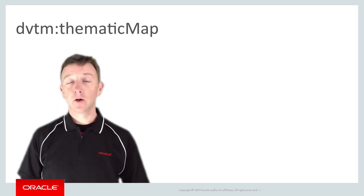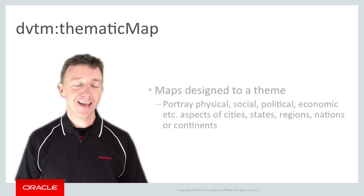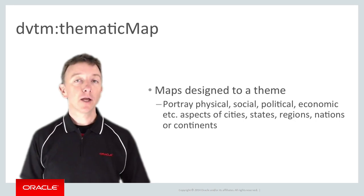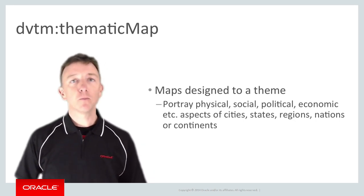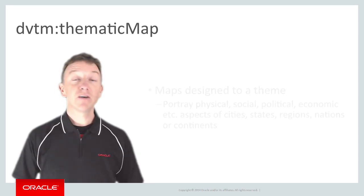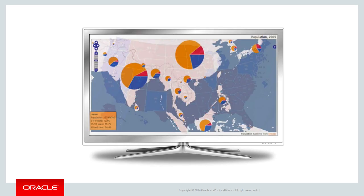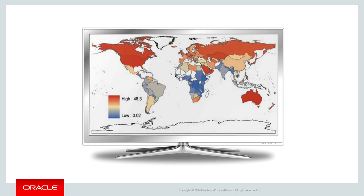This introduces the other map component known as the thematic map. The term thematic map is used for when you want to use maps to show a particular theme of data, usually still representing physical locations, but plotting social data, political data, or economic data against cities, states, regions, nations or continents. For example, if you've ever watched TV while the North American federal elections are on, you've seen a map showing the results of the US presidential elections by state, or a regional map that shows populations per age group for each country, or maps showing the world's worst polluters by GDP. These are all examples of thematic maps — a very powerful visualization for showing data plotted against cities, states, countries and regions.